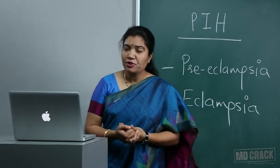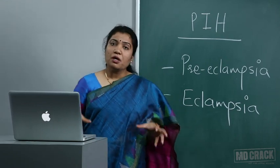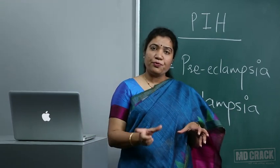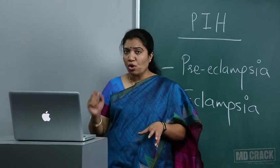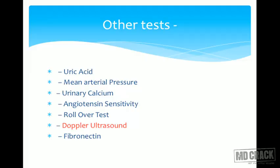Currently, Doppler ultrasound is the best test to predict PIH, indicating defective placentation that may lead to PIH or IUGR later. Elevated fibronectin levels are also suggestive of risk of developing PIH. To summarize: serum uric acid, mean arterial pressure, urinary calcium, angiotensin sensitivity test, rollover test, Doppler ultrasound, and fibronectin are all screening or prediction tests for PIH — MCQs are frequently asked on these.